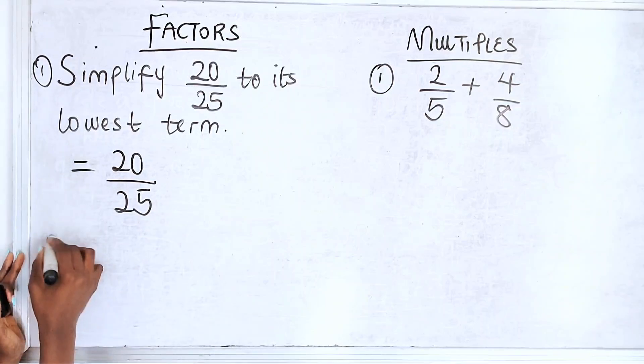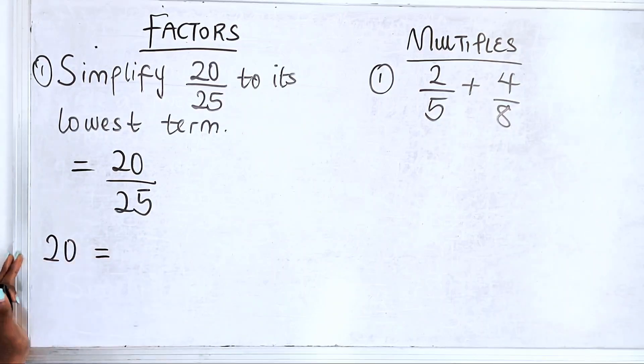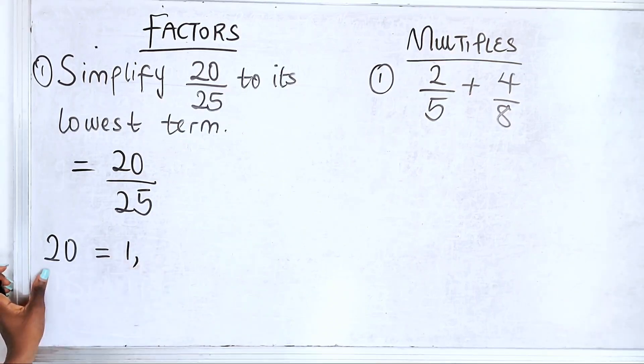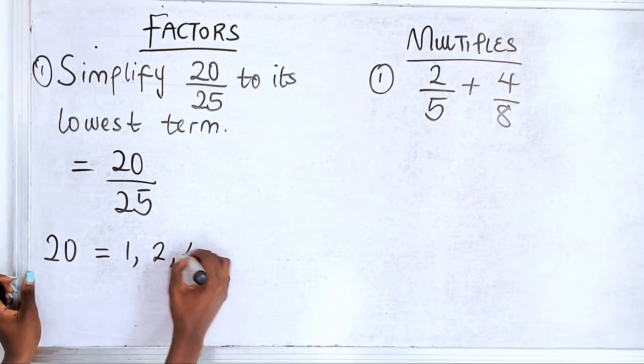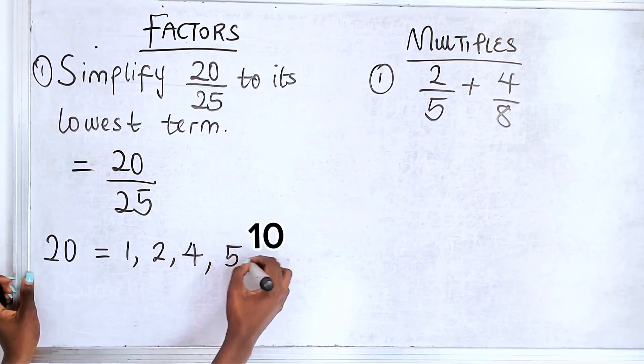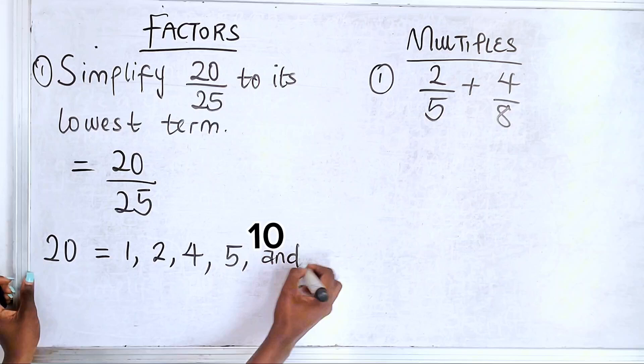But for those who do not know, you can come here and then list out those values that can go in 20. You have 1, you have 2, you have 4, 5, and 20.